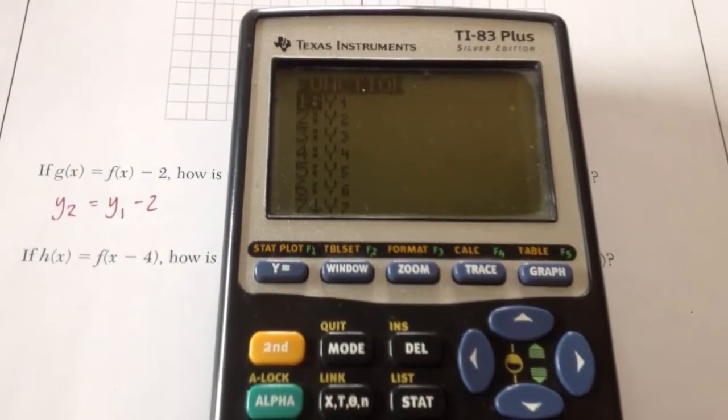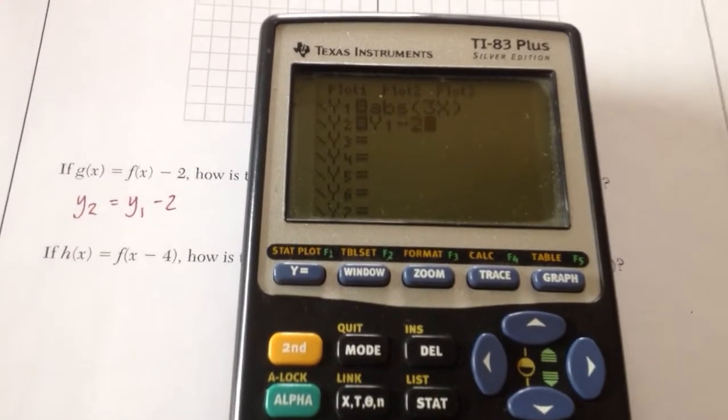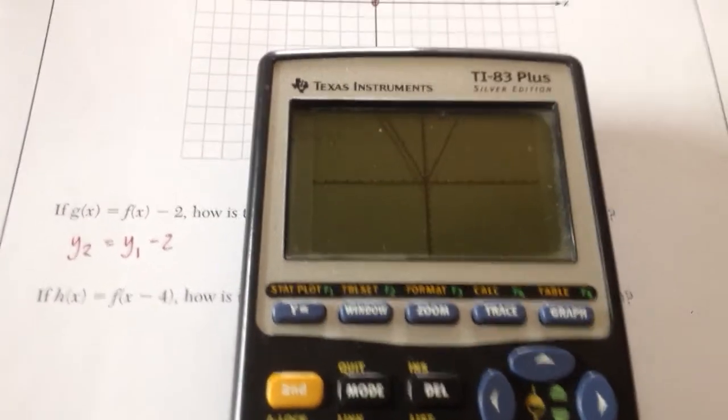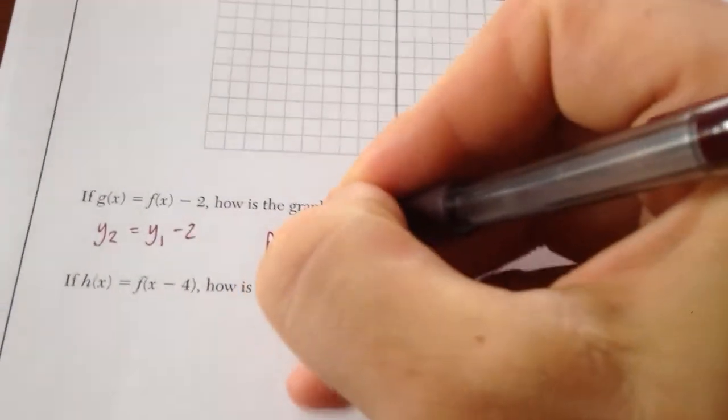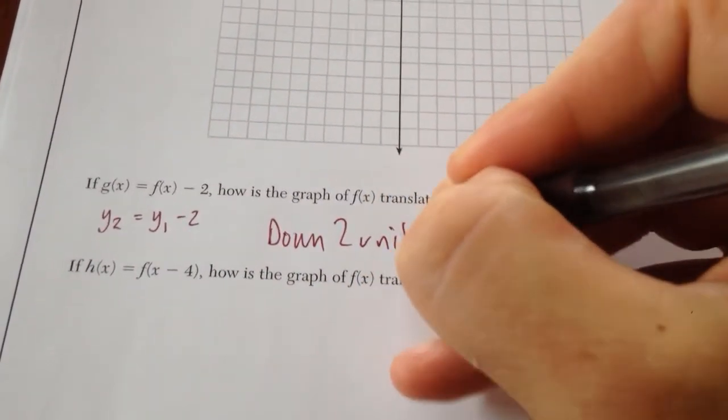Hit enter on y1 and subtract 2. Now you can go to graph and take a look. Well, what happened to that graph? It looked like it went down 2 units.